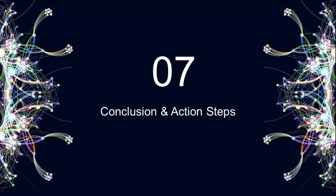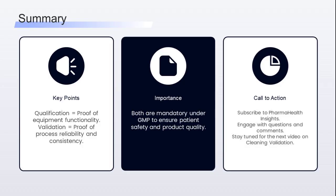To sum it all up: qualification is your proof that the equipment and systems work as intended. Validation is your proof that the process works consistently and reliably. Both are mandatory under GMP and are essential for ensuring patient safety and product quality. If you found this video useful, please subscribe to Pharma Health Insights and tap the like button. Have any questions or a tricky validation scenario you are facing? Drop it in the comments.